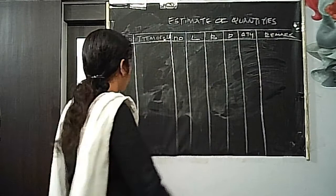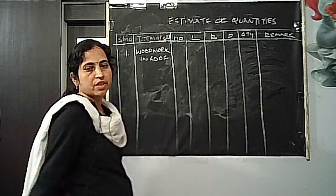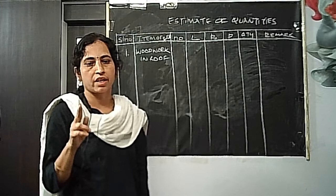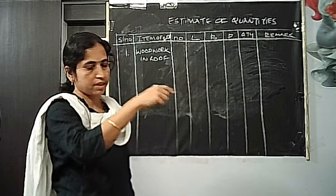First, we will start with woodwork in the roof. Our main intention is to calculate the volume of woodwork used in the roof. In the lean-to roof there are two support members: rafters along the shorter span, and battens running along the length.